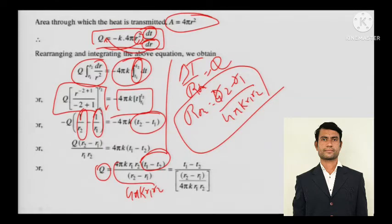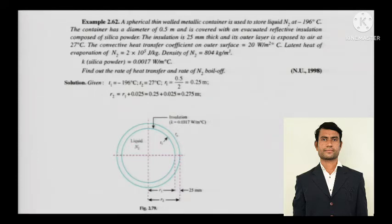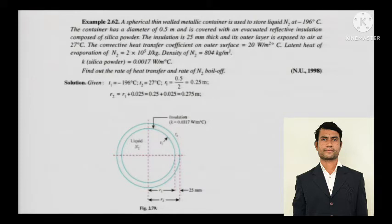Numerical 1: A spherical thin-wall metallic container stores liquid nitrogen at -196°C. The container has a diameter of 0.5 m and is covered with evacuated reflective insulation of silica powder, 25 mm thick. The outer layer is exposed to air at 27°C. The convective heat transfer coefficient on the outer surface is 20 W/m²°C.